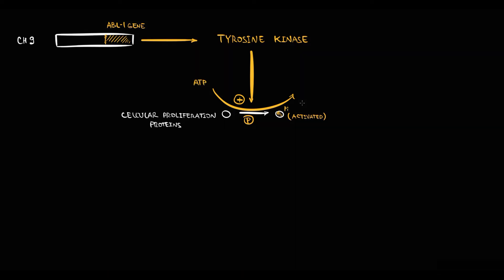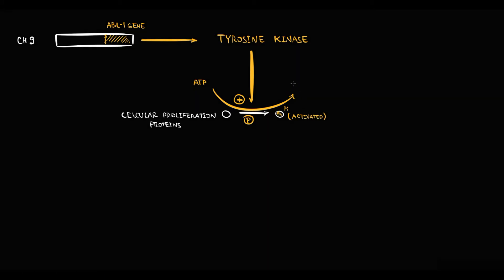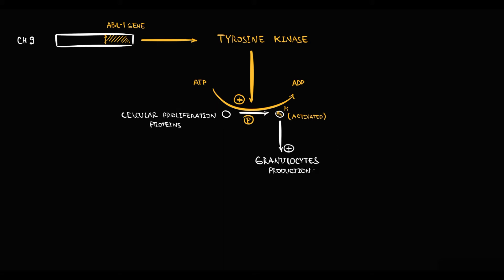By the ATP molecule, tyrosine kinase phosphorylates proteins, and as a byproduct ADP is released. Importantly, tyrosine kinase is involved primarily in the regulation of granulocytopoiesis — basically, this enzyme regulates the production of granulocytes.